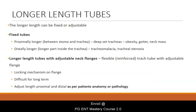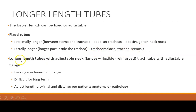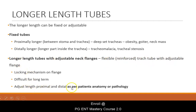Next, we move on to longer length tubes. These can be fixed or adjustable. Fixed tubes can be proximally longer or distally longer. Proximally longer means there is more length between the stoma and the trachea — used in deep-set tracheas such as in obese patients or those with a neck mass or goiter. Distally longer tubes, where the longer part is inside the trachea, are used in cases of tracheomalacia or tracheal stenosis. There is also a flexible reinforced tracheostomy tube with an adjustable neck flange, which you can position according to the patient's anatomy and pathology and then lock.